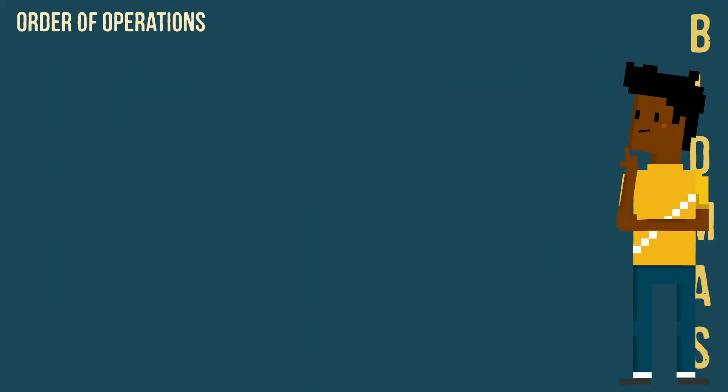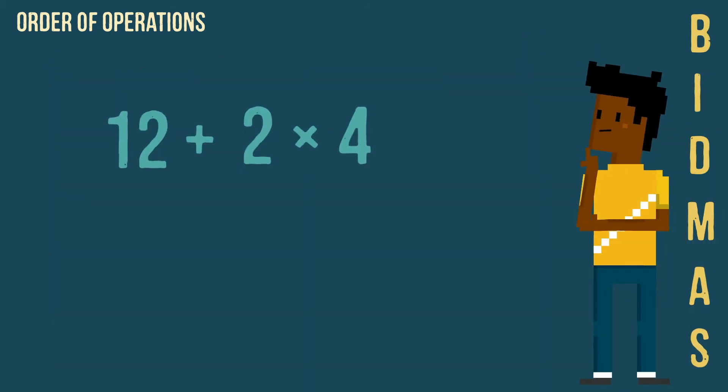Okay, so let's look at an example. Here there are no brackets, no indices, no division but there is a multiplication. So we calculate this first. Next we carry out the addition to solve the question.